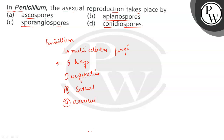The question is asking about the asexual reproduction taking place in case of Penicillium. In asexual reproduction of Penicillium, there is formation of spores.